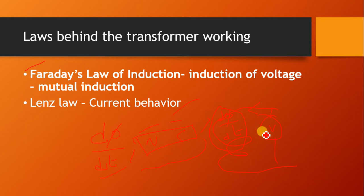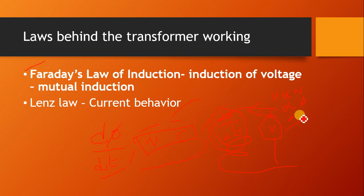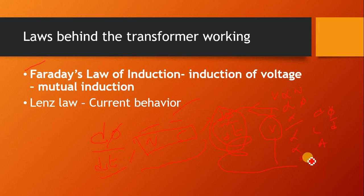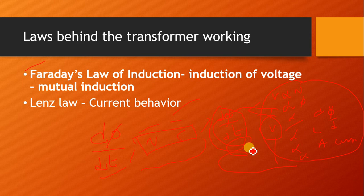There are many factors on which this induced voltage depends: it is directly proportional to the number of turns in the coil, directly proportional to the flux, directly proportional to the rate of change of flux, directly proportional to the length of the coil, and directly proportional to the area of cross-section of the coil. The whole principle of electromagnetic induction in the coil works on these parameters.